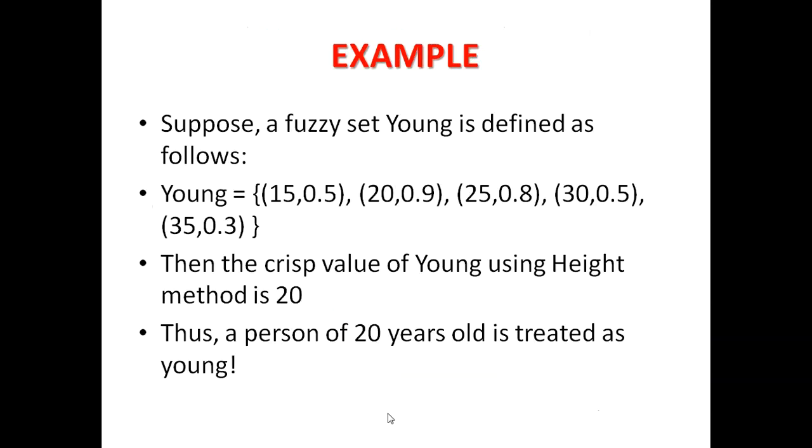Let's see an example. If we have a fuzzified set, that is the Young's way defined, that we have different values like 15, then membership value 0.5, then 20, 0.9, 25, 0.8, 30, 0.5, 35, 0.3. So here you can see the highest membership value that is 0.9 and the specific point value that is 20. So the crisp value is as per the height method that will be 20. So 20 years old will be treated as young.